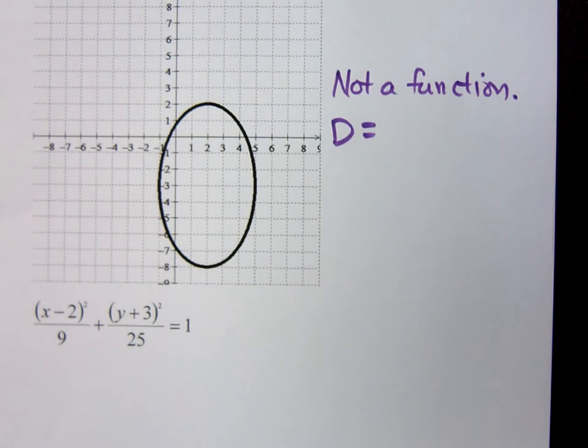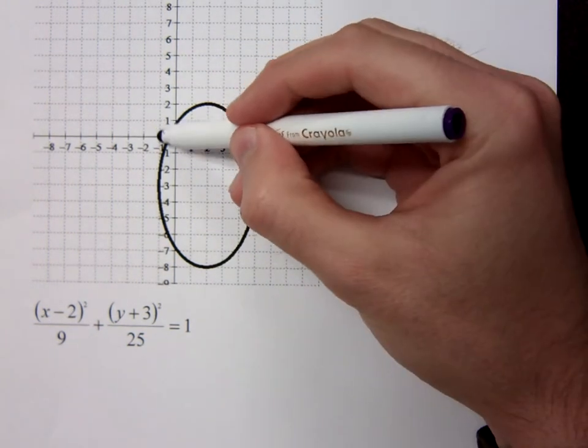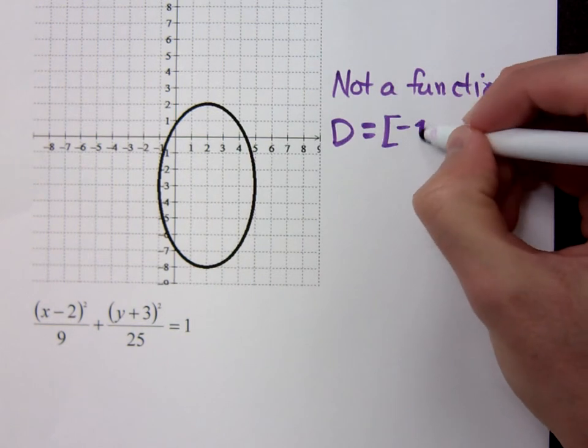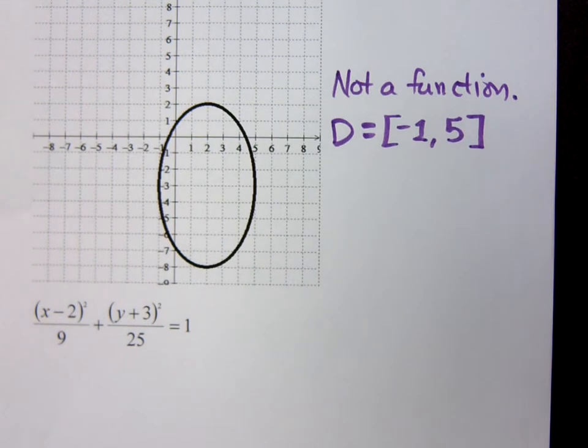The domain is the set of x values that are being used. Right, if you look at this, the furthest left you get is negative 1, the furthest right is positive 5. So that's going to be bracket negative 1 to 5. You're trying to find the set of x values that are used in this picture.